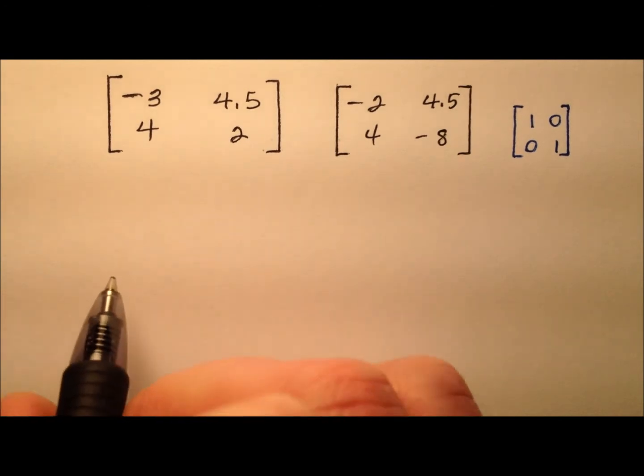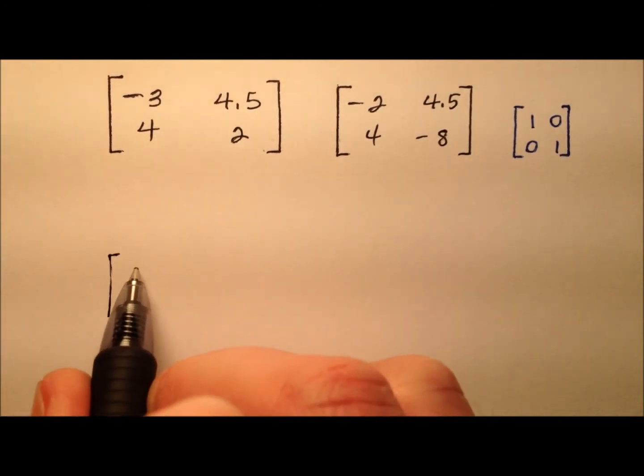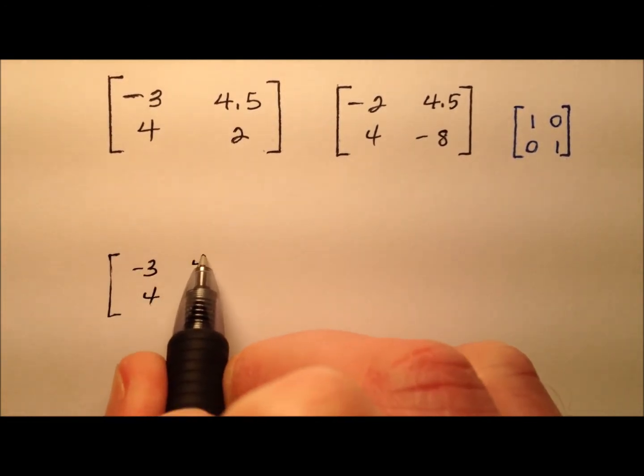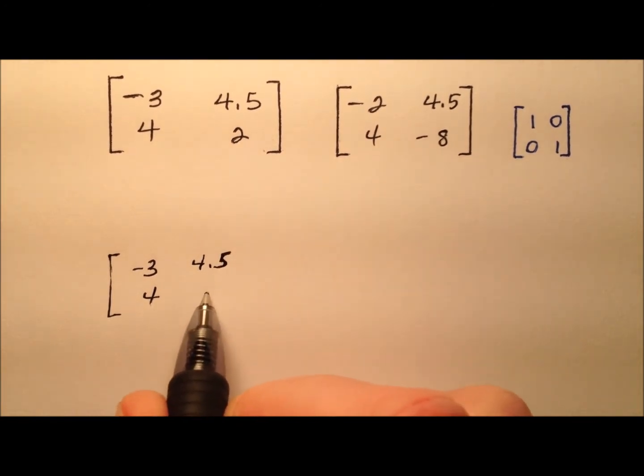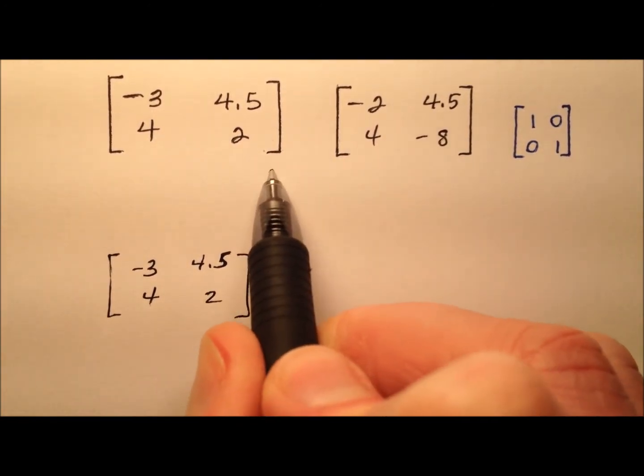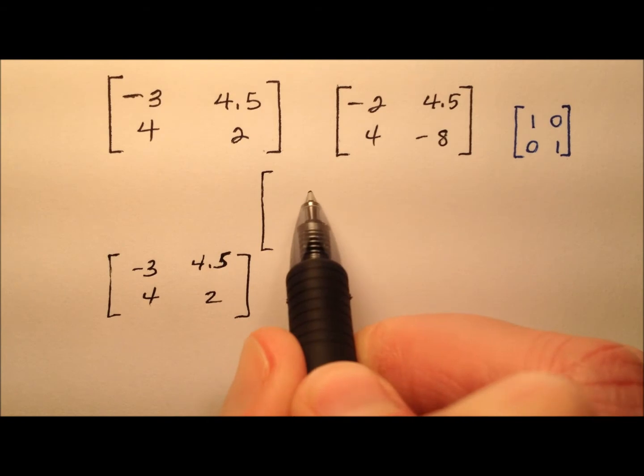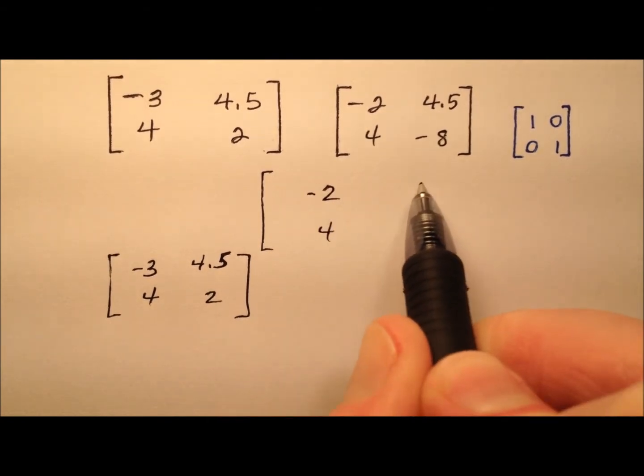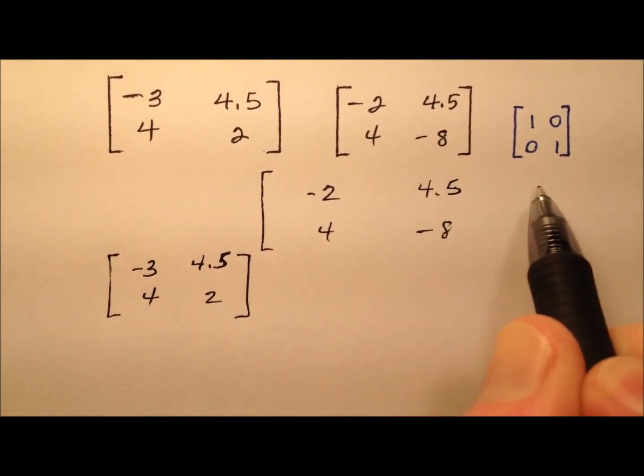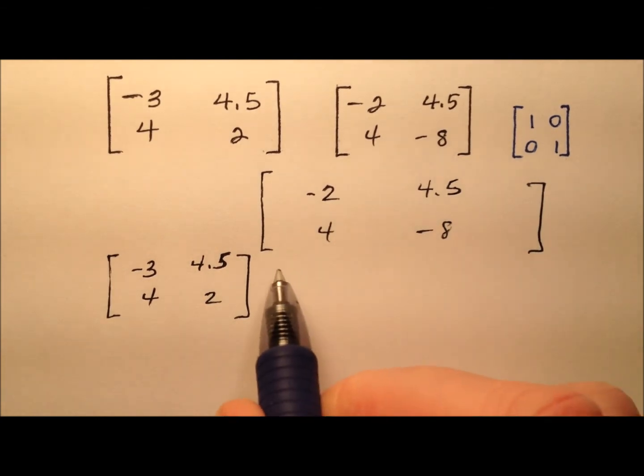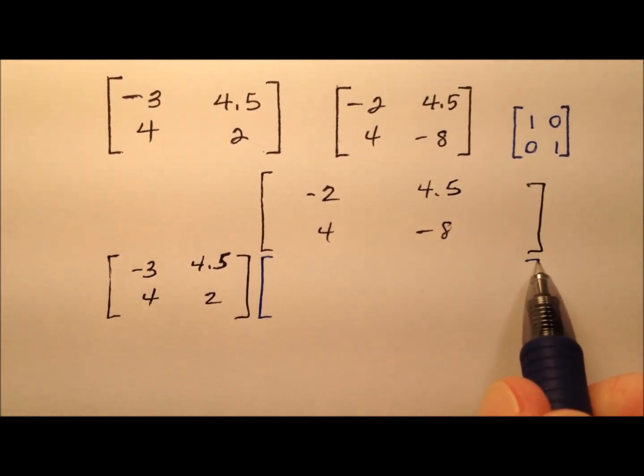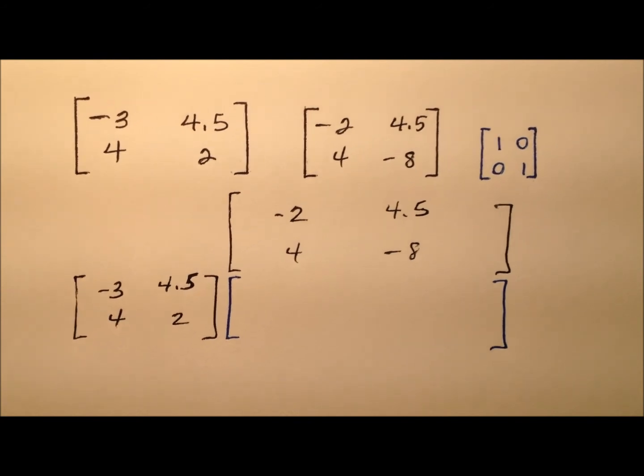So I'm going to copy down this first matrix again. So we have the negative 3, 4, and then 4.5 and 2. And I'll rewrite and raise up just a little bit this second matrix and then leave some space horizontally so we can work. And then let's go ahead and put our product matrix kind of right here and we'll show all of our work in there.